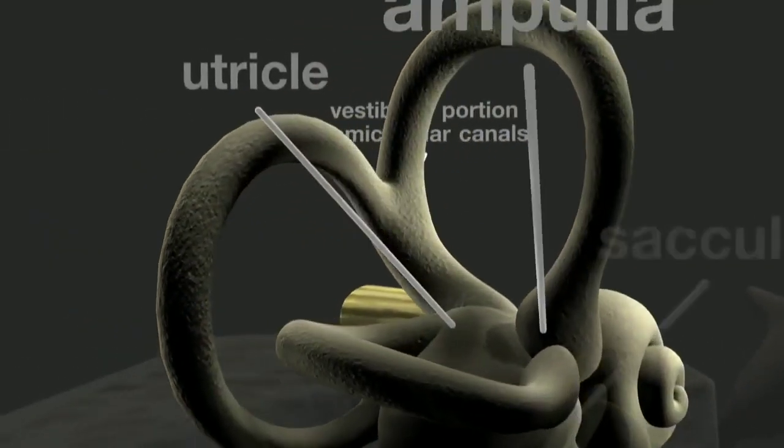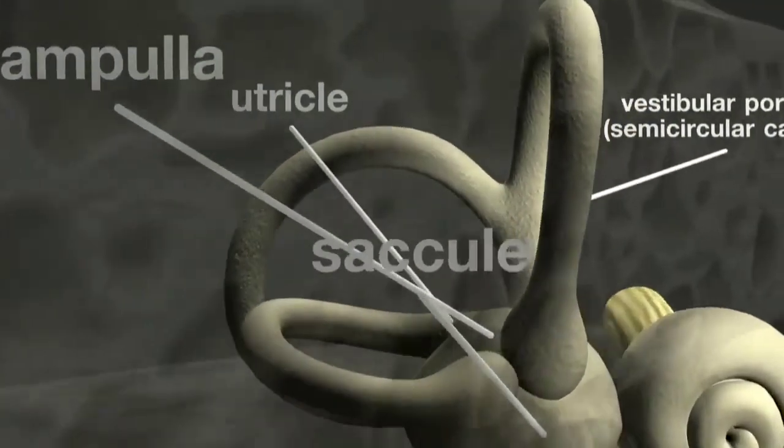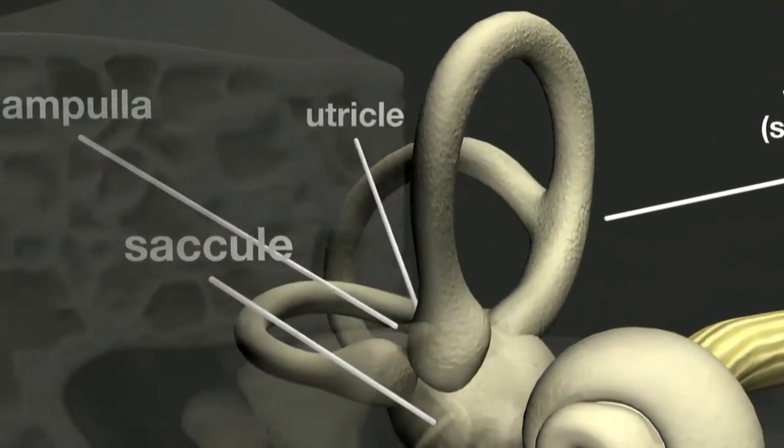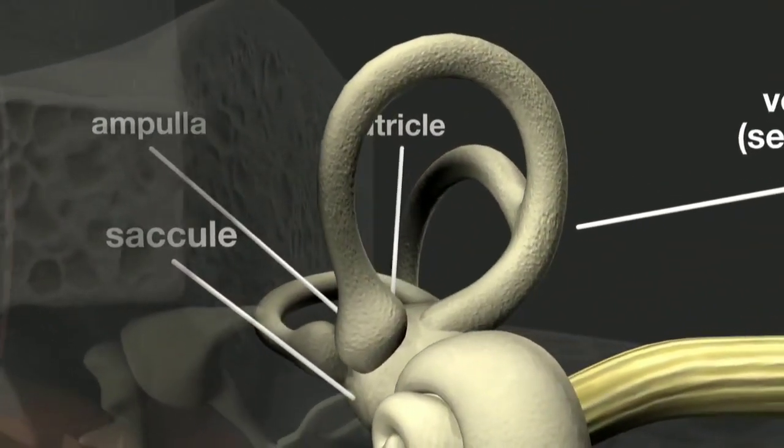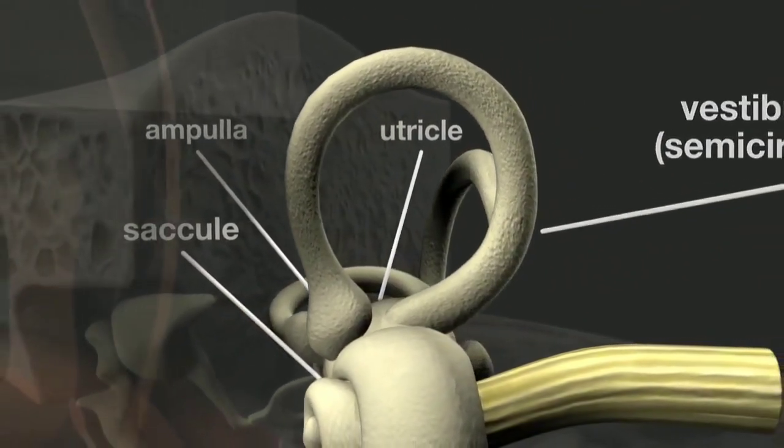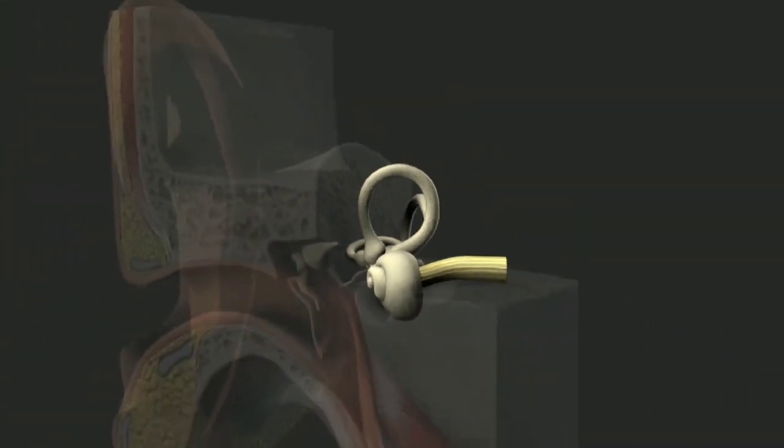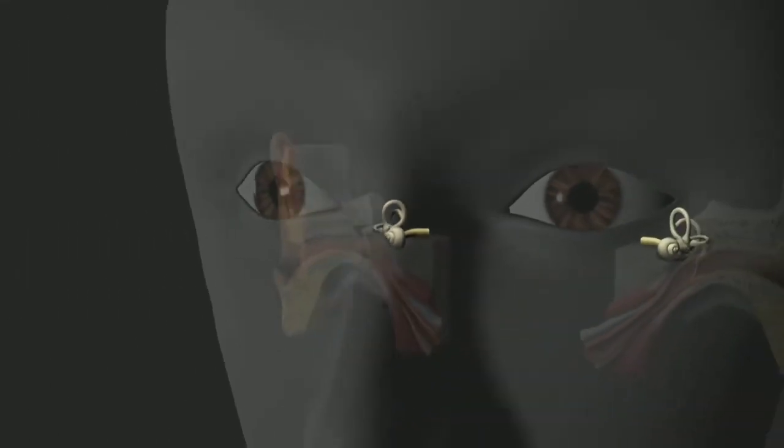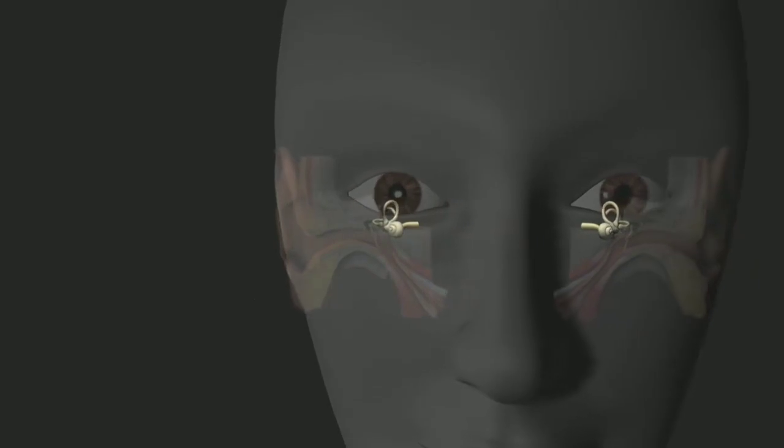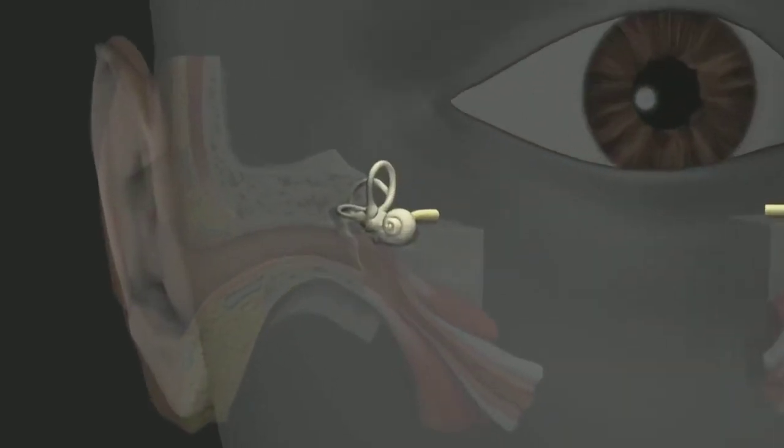The utricle and the saccule contain fluid and sensory cells which move in response to head movements and travel to indicate the body's status. The vestibular system works in conjunction with the eyes and the receptor cells in the joints of the body to continuously maintain our balance.